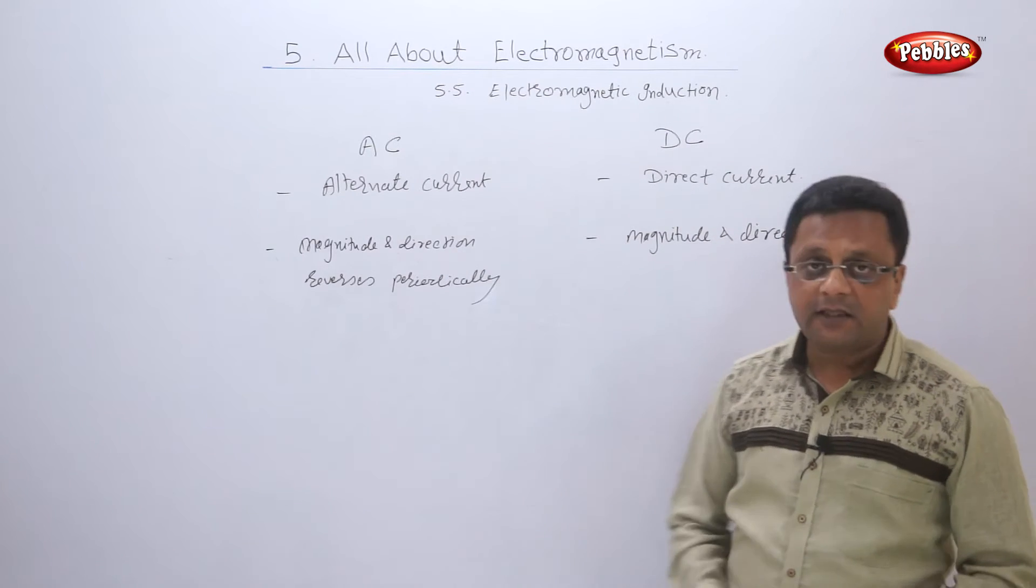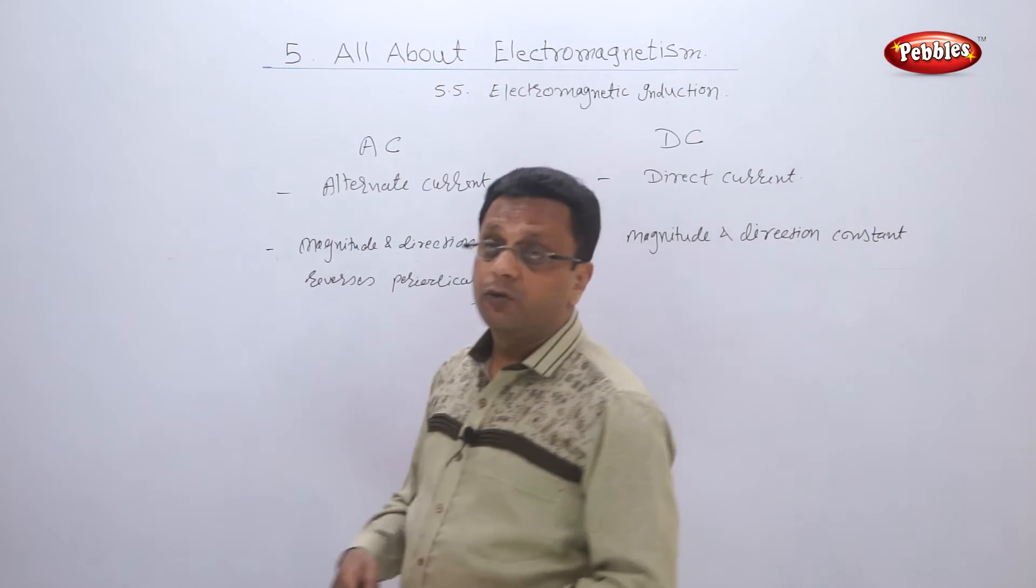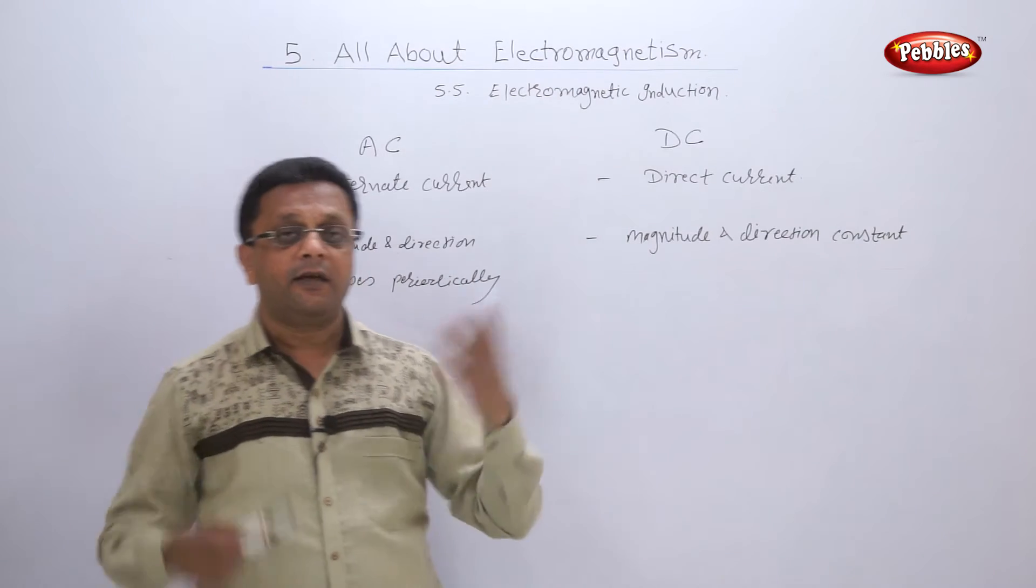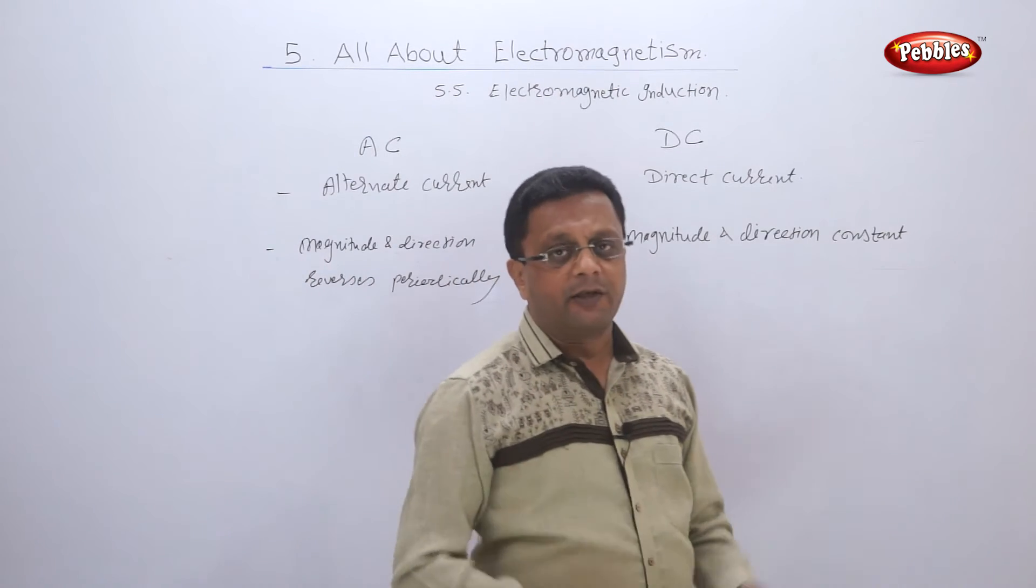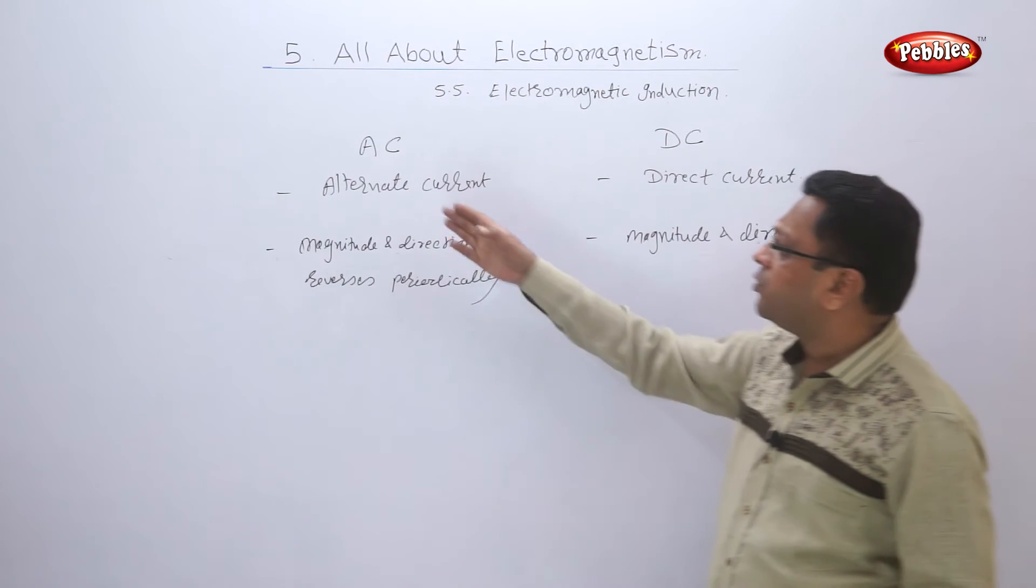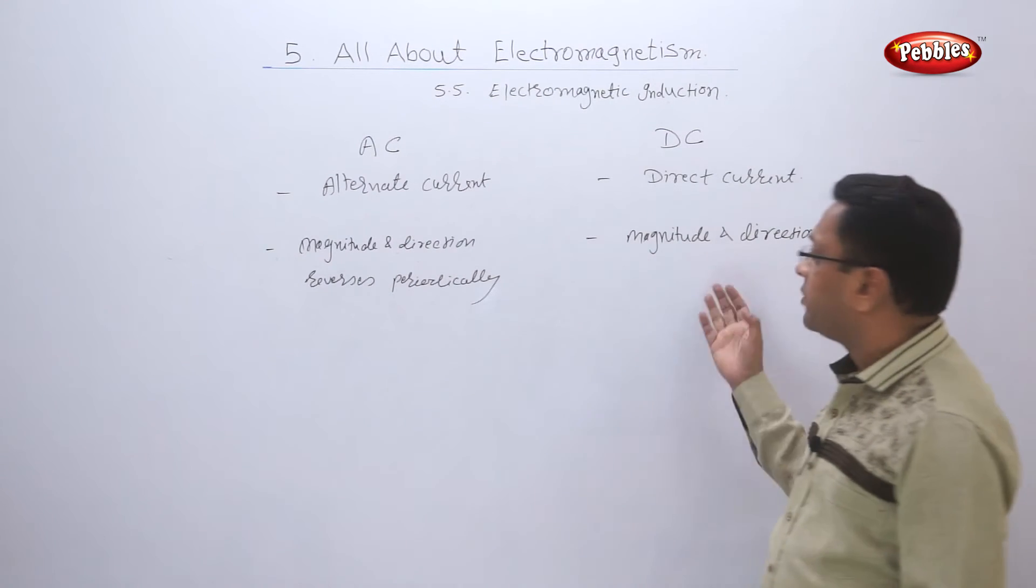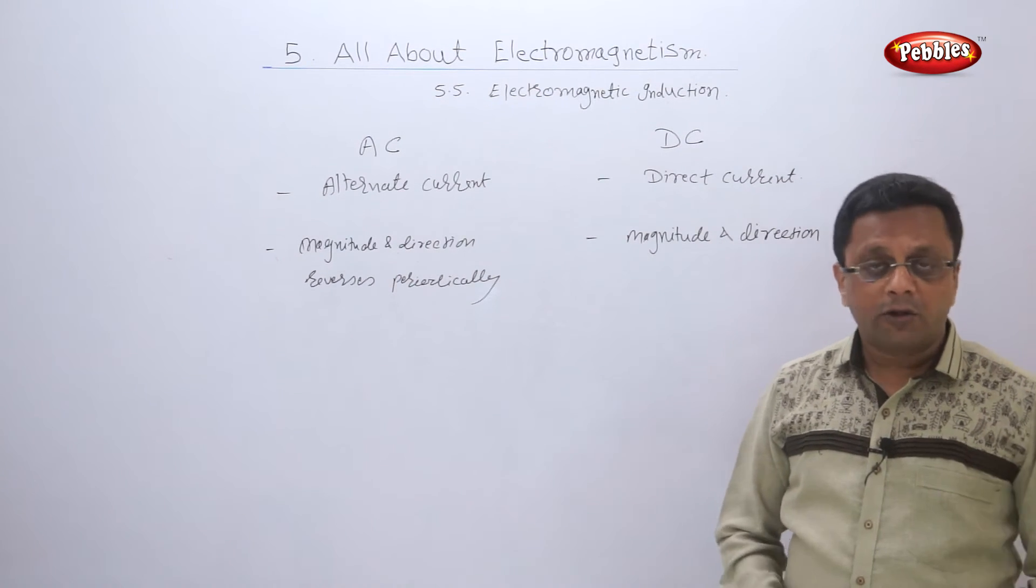AC alternating current is generally used in our households for lighting, fans, air conditioners, and other appliances. Why do we use AC current there and DC current in batteries?